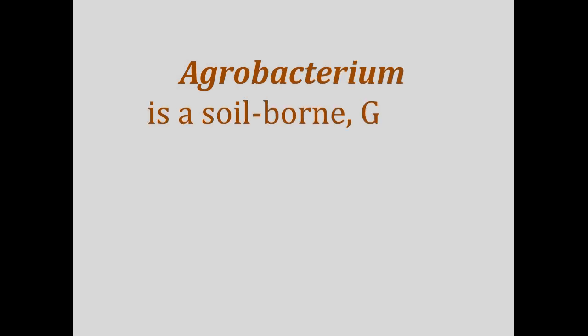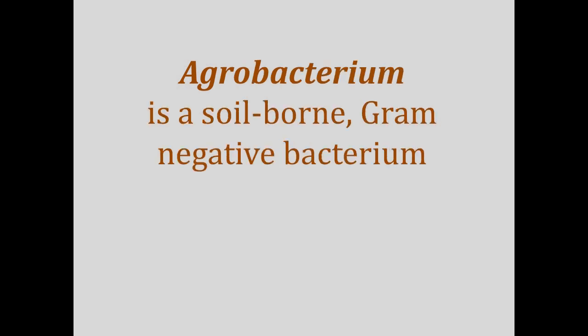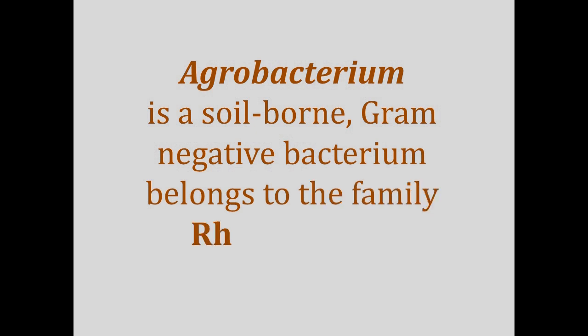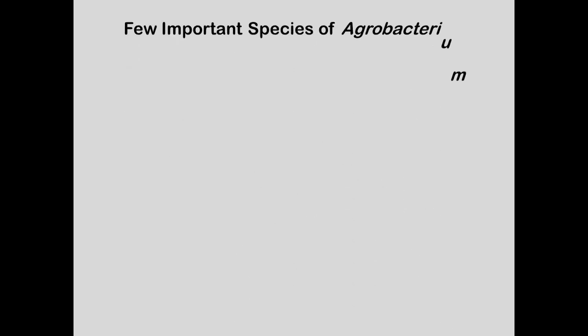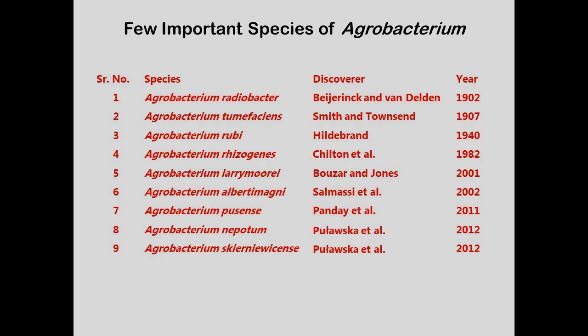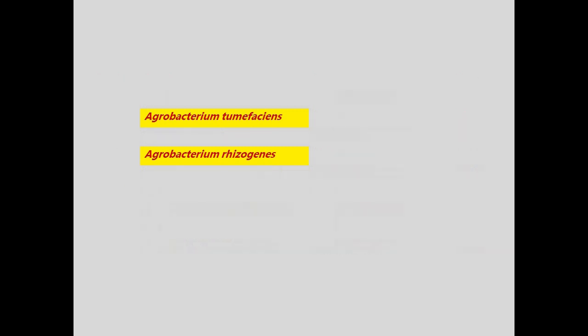Agrobacterium is a soil-born gram-negative bacterium and belongs to the same family as rhizobium. There are many species of agrobacterium. I have enlisted few of them along with the name of their discoverer and year of discovery. However, only two species are important to use as a tool to transfer certain genes in plants: tumefaciens and rhizogenes.